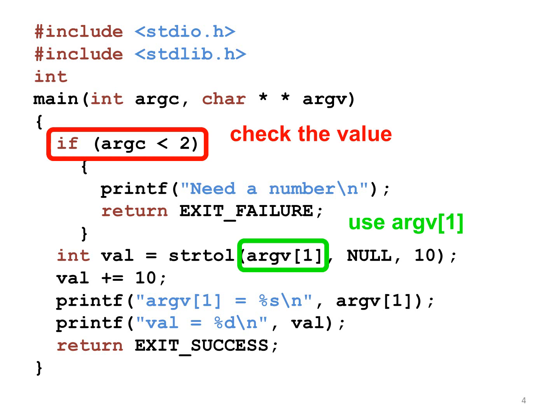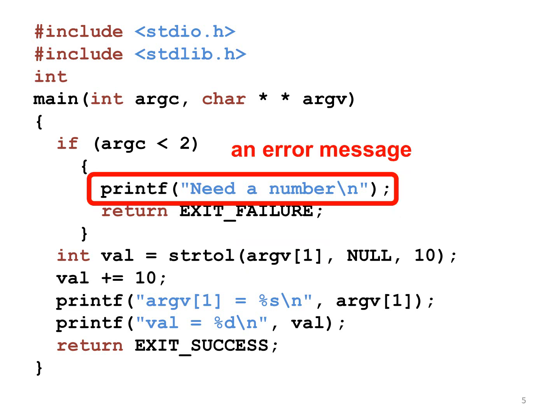This program needs one additional argument. In other words, it needs argv[1]. If no argument is given, this program cannot do its job. Thus, the program prints a message and then returns EXIT_FAILURE. This is the first example using EXIT_FAILURE. By returning EXIT_FAILURE, this program indicates that it is unable to do its job.